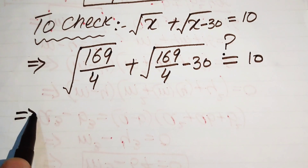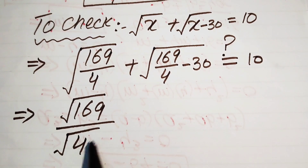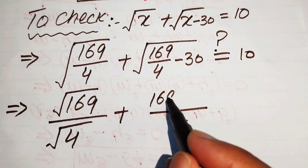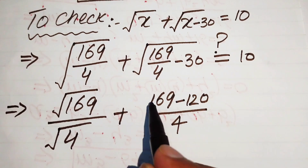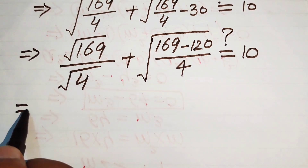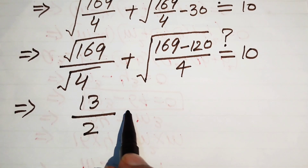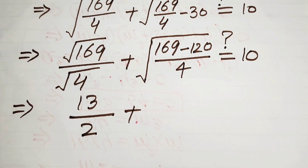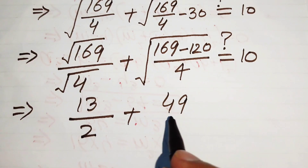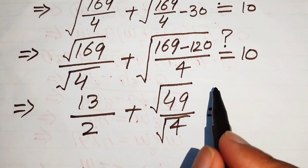We separate the square roots: square root of 169 divided by square root of 4, plus the square root of the second term. For the second term, we take the LCM of 4, giving us (169 minus 120) over 4, which is 49 over 4. We check: square root of 169 is 13, square root of 4 is 2, so we have 13 over 2 plus square root of (49 over 4).